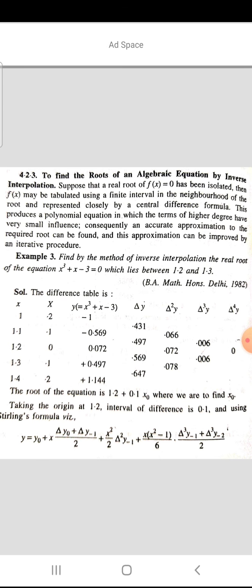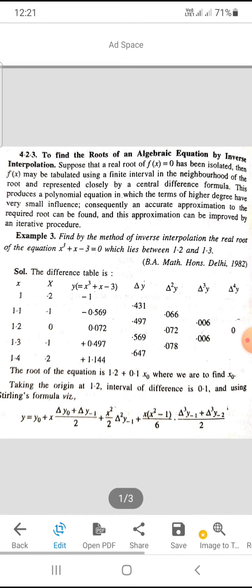When x = 1, capital X = 0.2, and y which equals x³ + x - 3 is -1. Corresponding values: at x = 1.1, X = 0.1, y = -0.569. When x = 1.2, X = 0, y = 0.072. When x = 1.3, X = 0.1, y = +0.497.